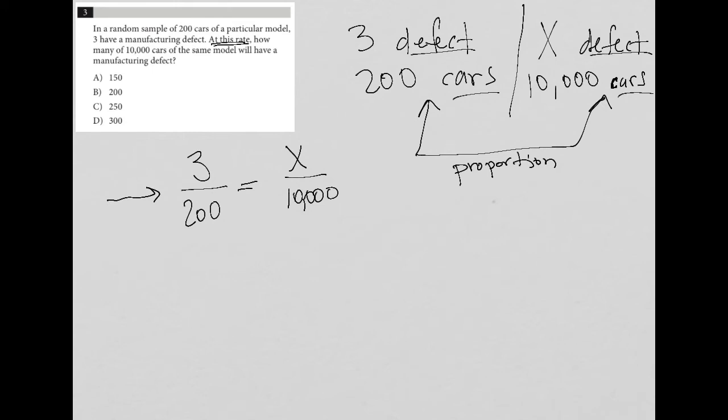So whatever that first unit was - the $25 per hour, or for us in this case the 3 defects per 200 cars - that ratio should be exactly equal to this ratio here when we scale up the number of cars from 200 to 10,000.